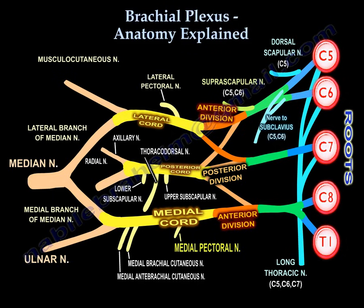The terminal branch of the medial cord is the ulnar nerve. It also gives a medial branch to the median nerve. The lateral branch of the median nerve from the lateral cord and the medial branch from the medial cord join together to form the median nerve. To summarize: the posterior cord gives you the radial and axillary nerves, the lateral cord gives the musculocutaneous nerve, and the medial cord gives the ulnar nerve.